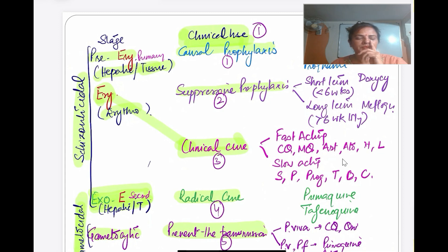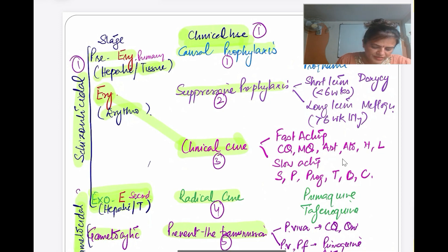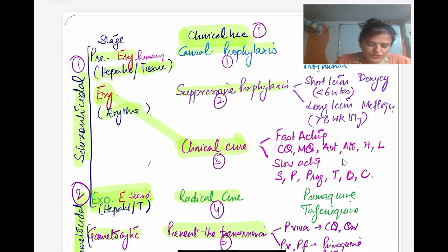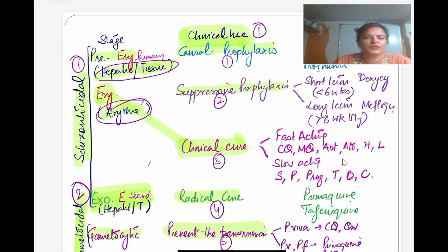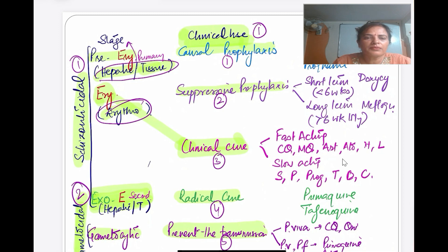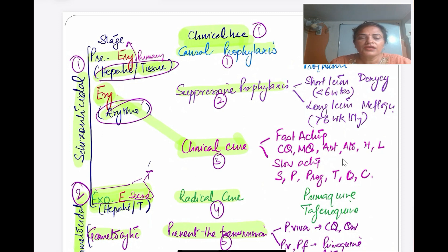Another way of classifying is depending on the plasmodial state — we have schizonticide and gametocidal drugs. Schizonticides include tissue schizonticides (hepatic schizonticides) and erythrocytic schizonticides. Tissue schizonticides acting on the pre-erythrocytic stage are called primary, and those acting on the exo-erythrocytic stage are called secondary. This is the second way of classifying anti-malarial drugs.